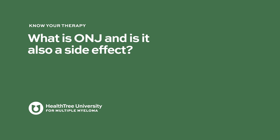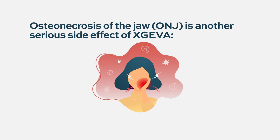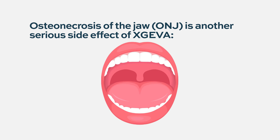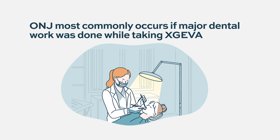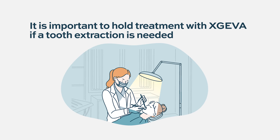What is ONJ and is it a side effect? One of the most severe side effects of bone targeting agents, whether Zometa or Denosumab Xgeva, is osteonecrosis of the jaw (ONJ). Basically, the bone turnover gets affected and you can have areas in your mouth, especially around your teeth, where bone is exposed. This can happen without any particular dental work, but it often happens after a tooth extraction or dental procedure. It's very important to hold bone targeting agents before any mouth procedures, most specifically tooth extractions — you should be off Denosumab for a while before that can be done safely.